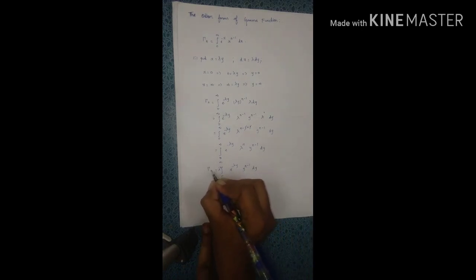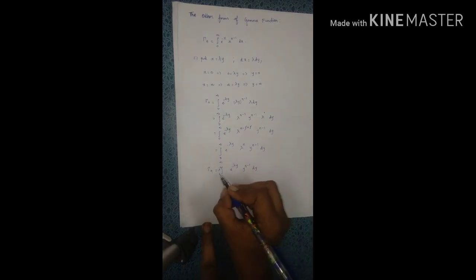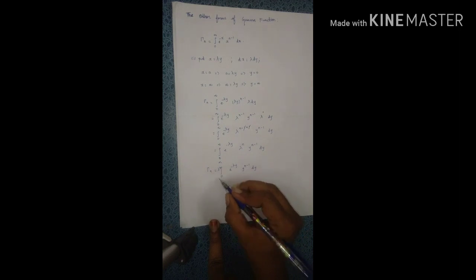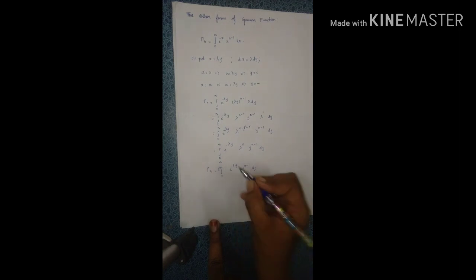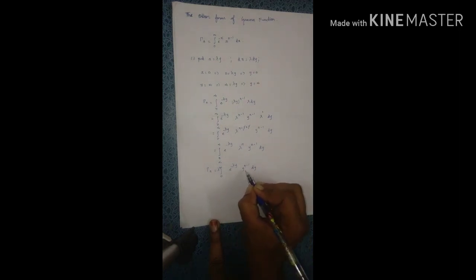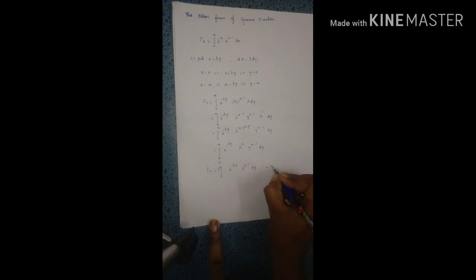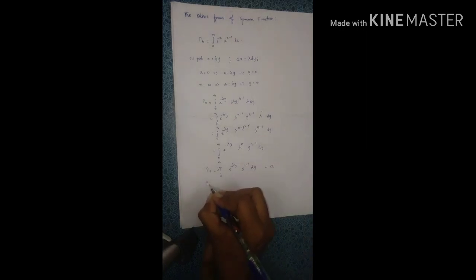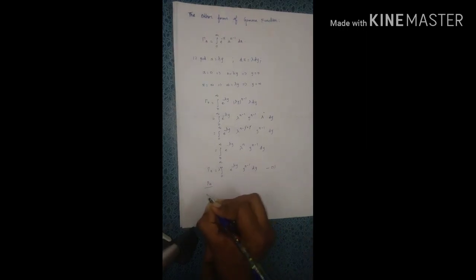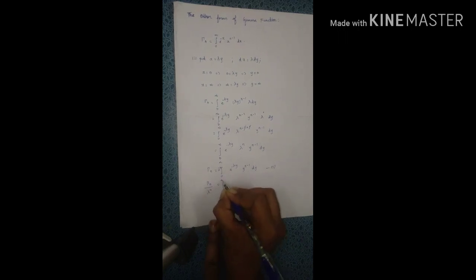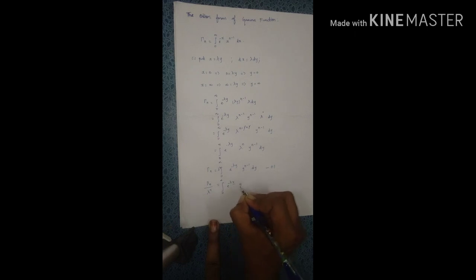Hence, gamma n equals lambda to the power of n times the integral between the limits 0 to infinity of e to the power of minus lambda y times y to the power of n minus 1 dy. This is the first form. Or equivalently, gamma n divided by lambda to the power of n equals the integral from 0 to infinity of e to the power of minus lambda y times y to the power of n minus 1 dy.